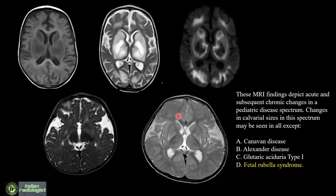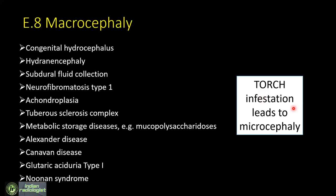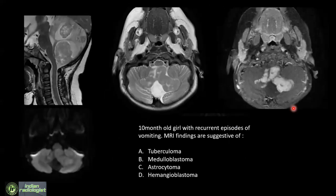In glutaric aciduria type 1, the calvarium enlarges causing macrocephaly. Macrocephaly-related pathologies include congenital hydrocephalus, hydranencephaly, neurofibromatosis type 1, tuberous sclerosis, metabolic storage disorders, Alexander's disease, Canavan's, glutaric aciduria, and Noonan's. However, rubella — part of the TORCH spectrum — leads to microcephaly, not macrocephaly. That is why it is the answer.